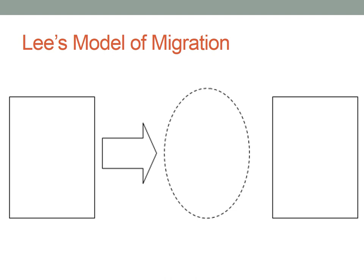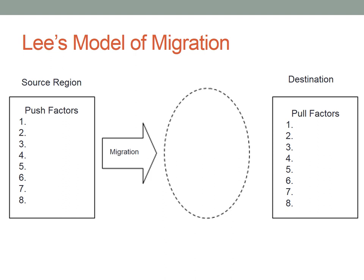This visual is going to help us understand Lee's Model of Migration, but we have to label a couple of things first. On the far left we have the source region — that's where somebody starts. On the far right we have the destination — that's where they're headed. In the source region there are push factors, the negatives, so draw in little negative symbols on that side. That's what's pushing them to leave as they migrate. They head to the area that they are pulled to — those are the positives, little plus signs — all the reasons pulling them to immigrate to that particular location.